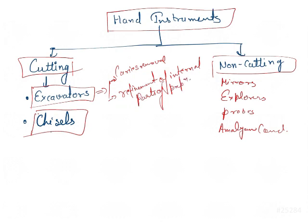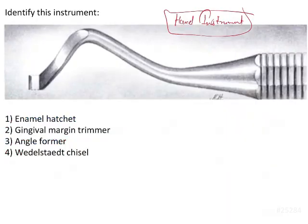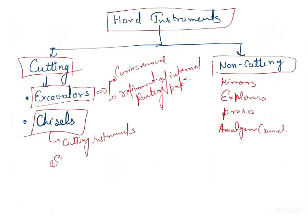Chisels are primarily used for cutting enamel and can be further subdivided into straight chisel, curved chisel, and bent angle chisel. These are the primary cutting instruments. They can be grouped into straight, curved, and bent angle chisels.